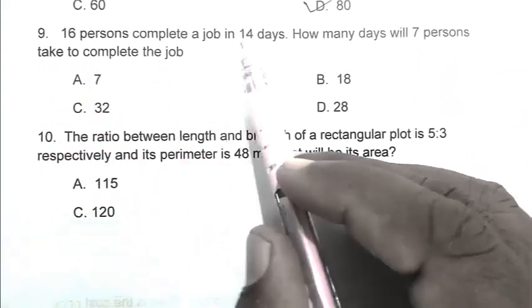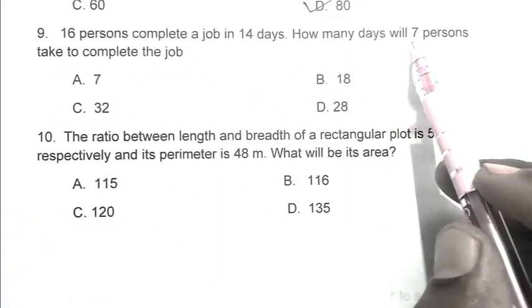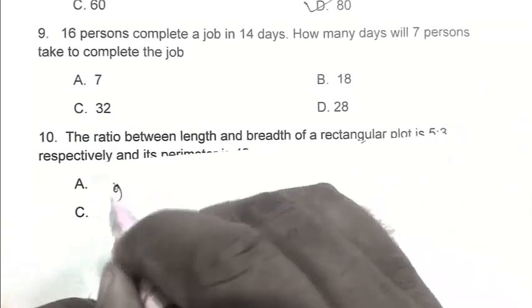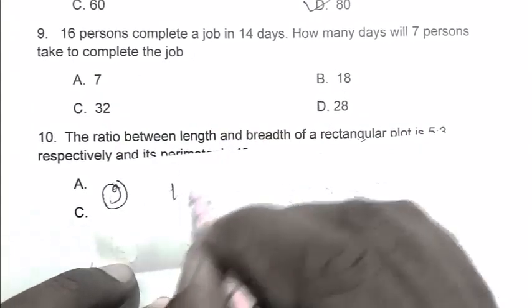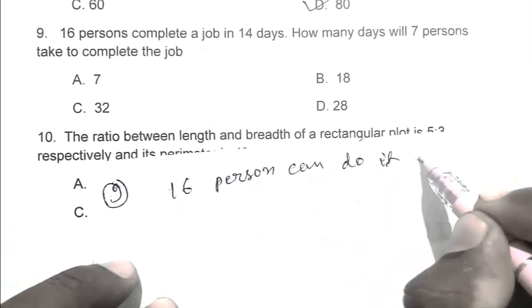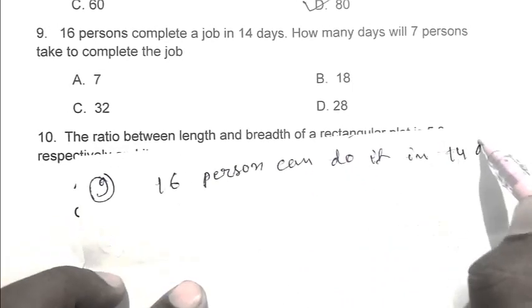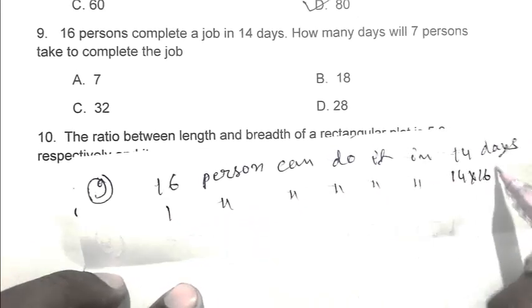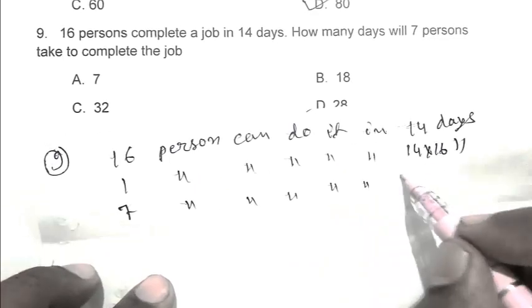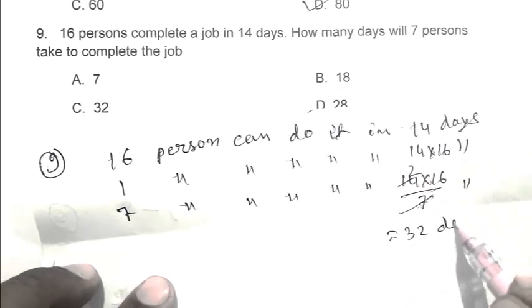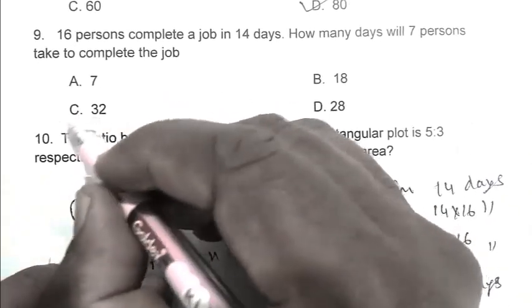Question number 9. 16 workers complete a job in 14 days. How many days will 7 workers take to complete the job? So friend, we can calculate it by the simple unitary method. 1 worker can do it in 14 multiplied by 16 days, so 7 workers can do it in 14 multiplied by 16 divided by 7 days, that is 32 days. So friend, C is the right answer.